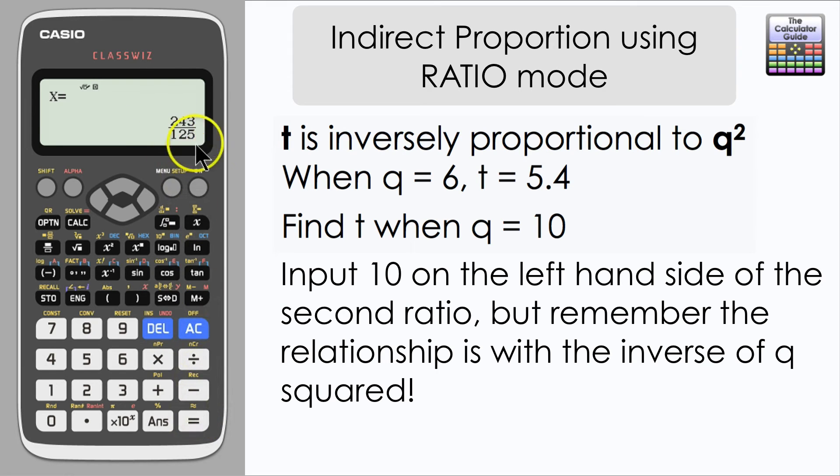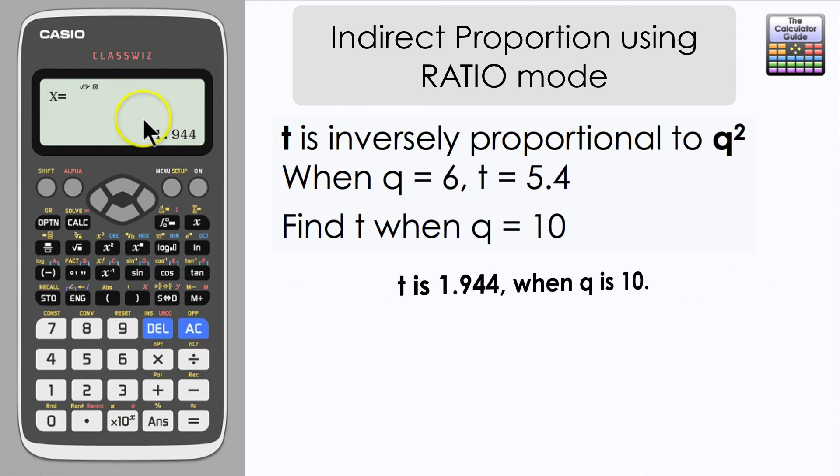If we press equals we get our X value. Here it is presented as a fraction. You might want to press SD to get it presented as a decimal. 1.944. So when Q is 10, T is 1.944.